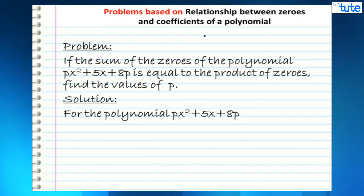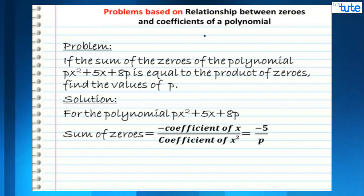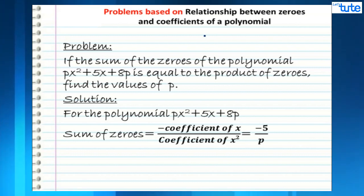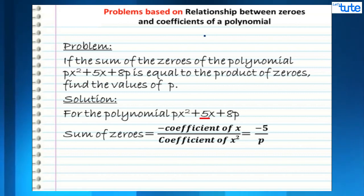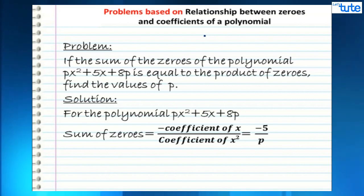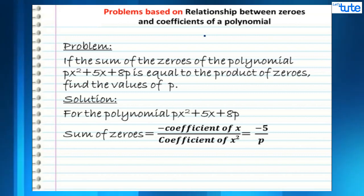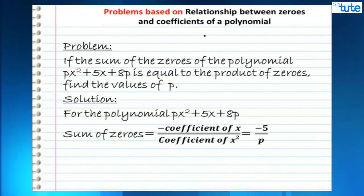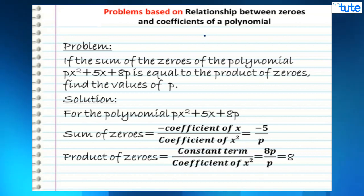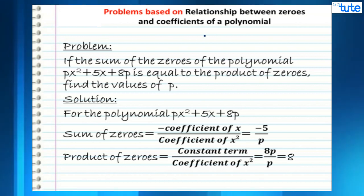For the polynomial px² + 5x + 8p, the sum of zeros can be written as minus coefficient of x upon coefficient of x². The coefficient of x is 5, so the numerator becomes minus 5. The coefficient of x² is p, so the denominator becomes p. Therefore the sum of zeros is equal to minus 5 upon p.